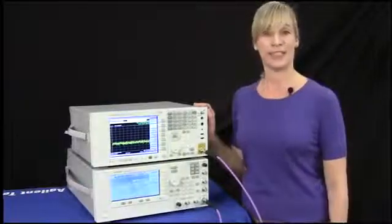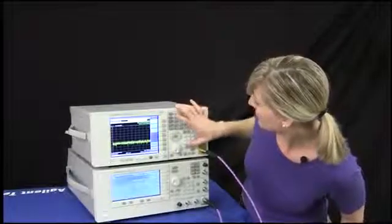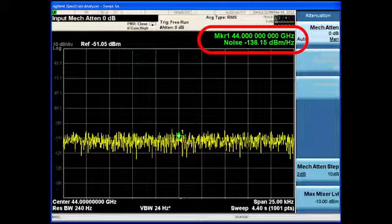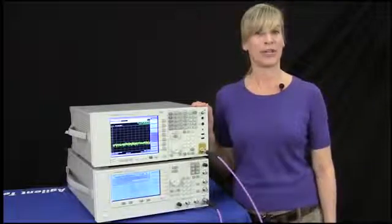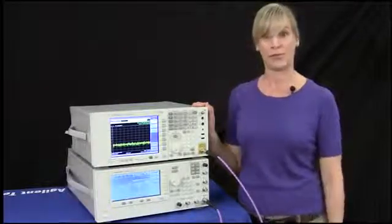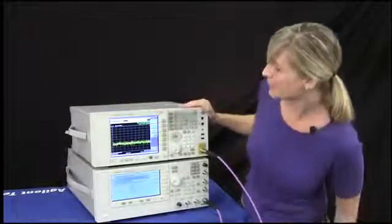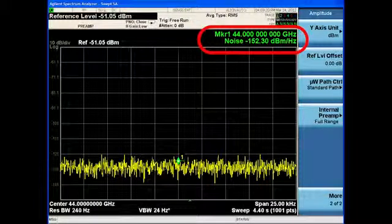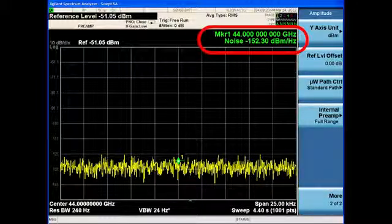We can improve the sensitivity by setting our attenuation to 0 dB. And this further improves the noise floor performance of the analyzer. The new millimeter wave EXA comes with a pre-amplifier option, P44, that enables you to improve the sensitivity all the way up to 44 GHz. And now you can see that the noise floor performance of the new millimeter wave EXA at 44 GHz is better than negative 150 dBm per Hz.